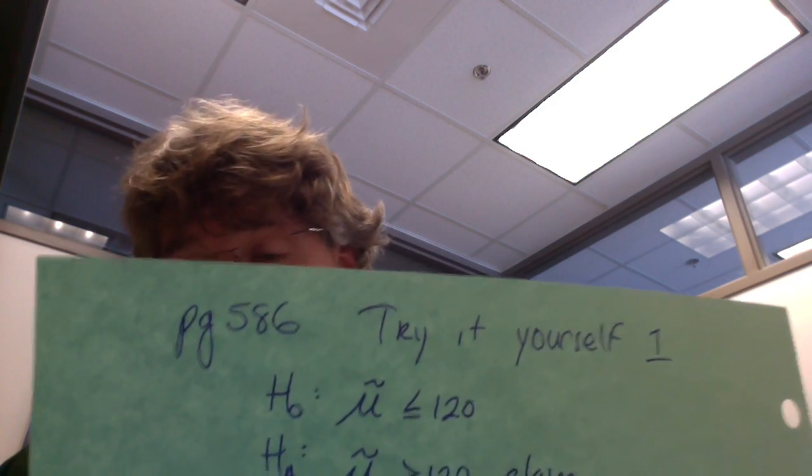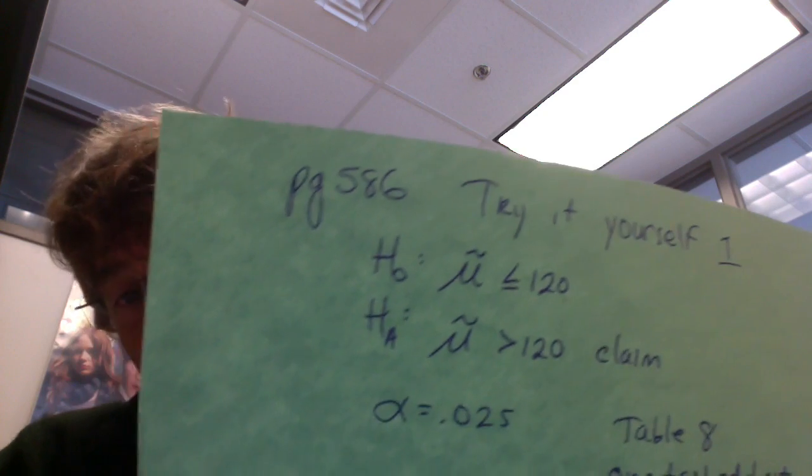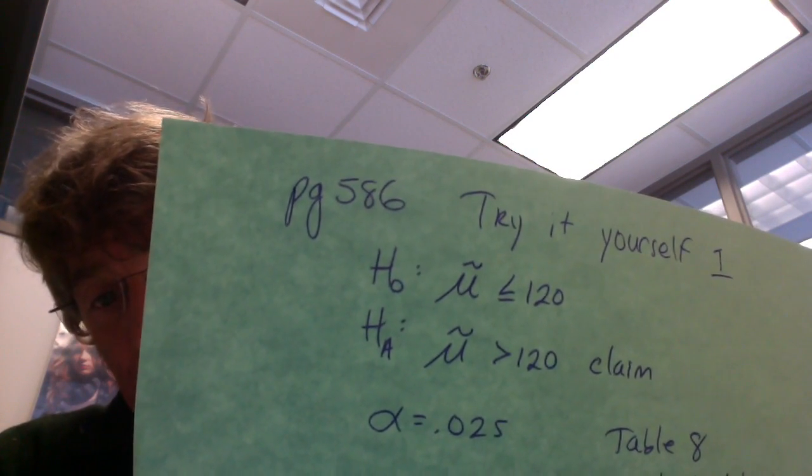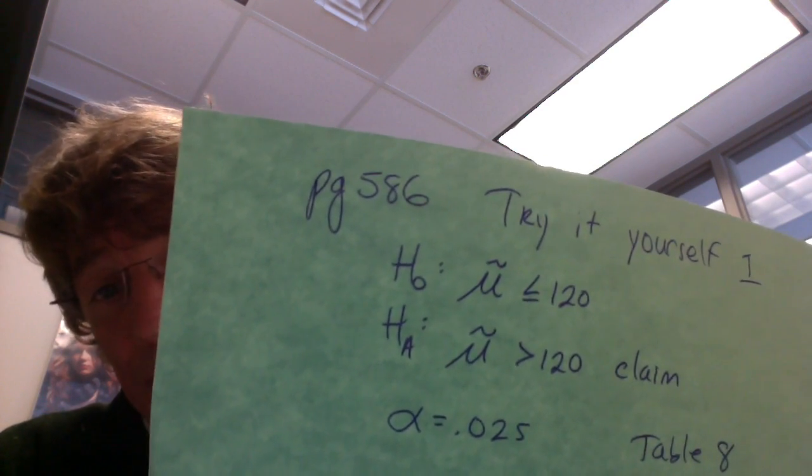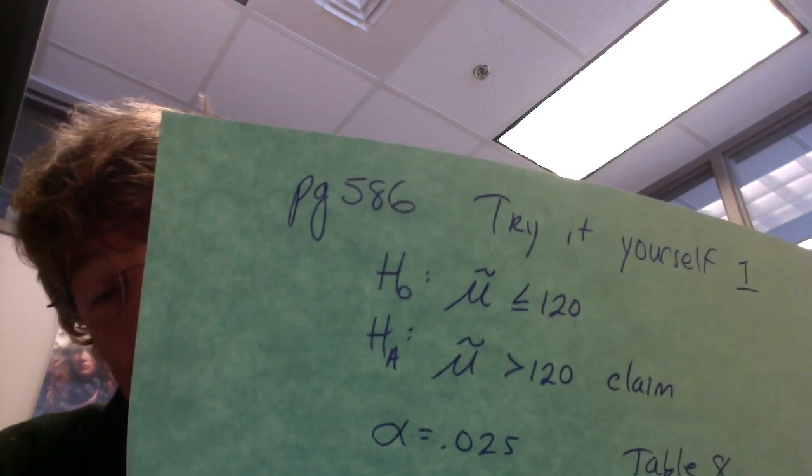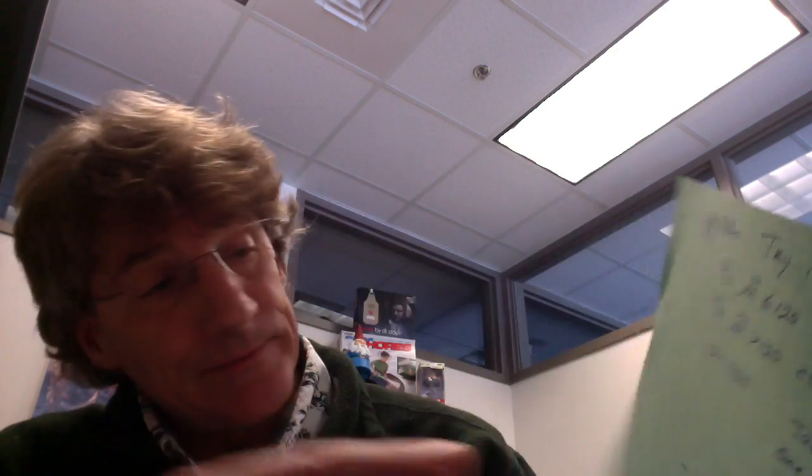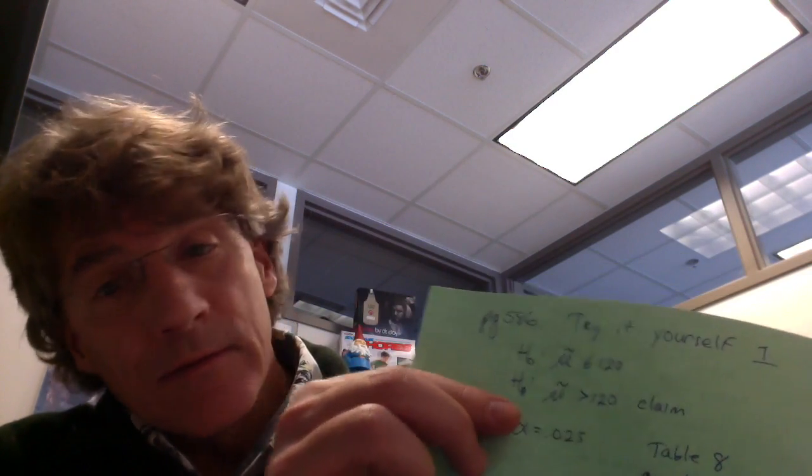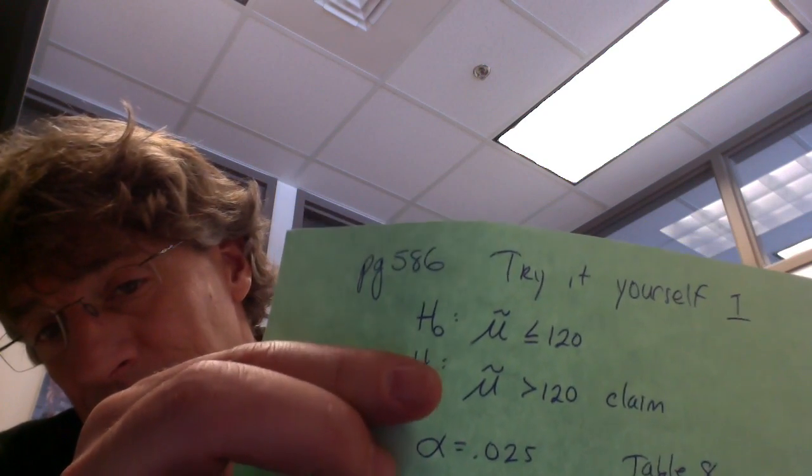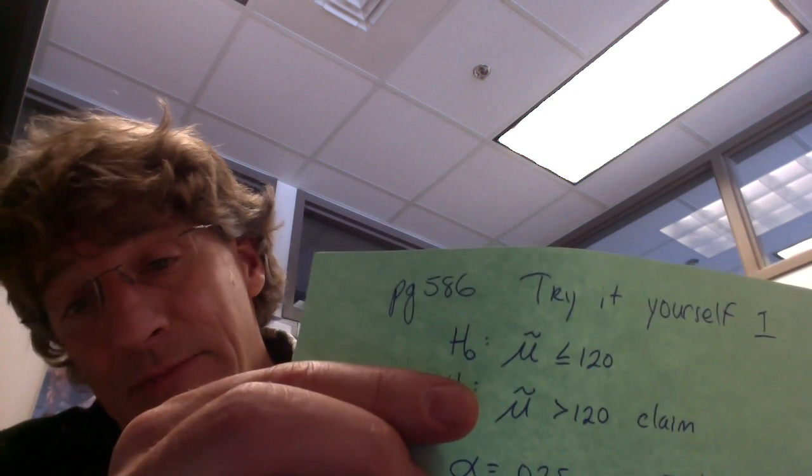So, I wrote it all up nice and neat. Try it yourself, number 1. When you're looking at this, you're going to see the null and the alternative, and I need to introduce a new parameter to you, and it's mu tilde. Right there is mu tilde. That's the median.